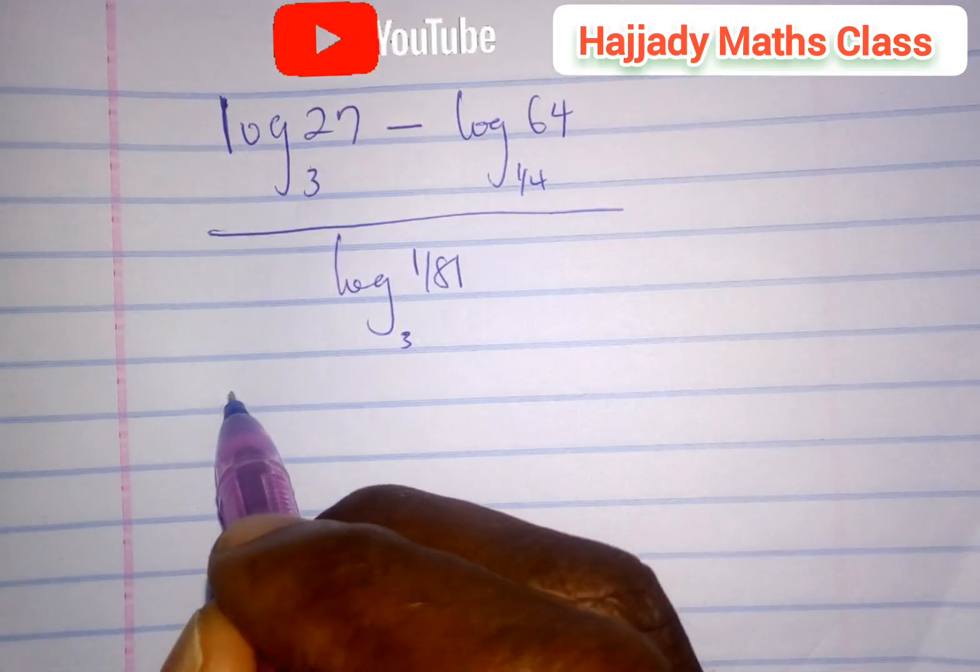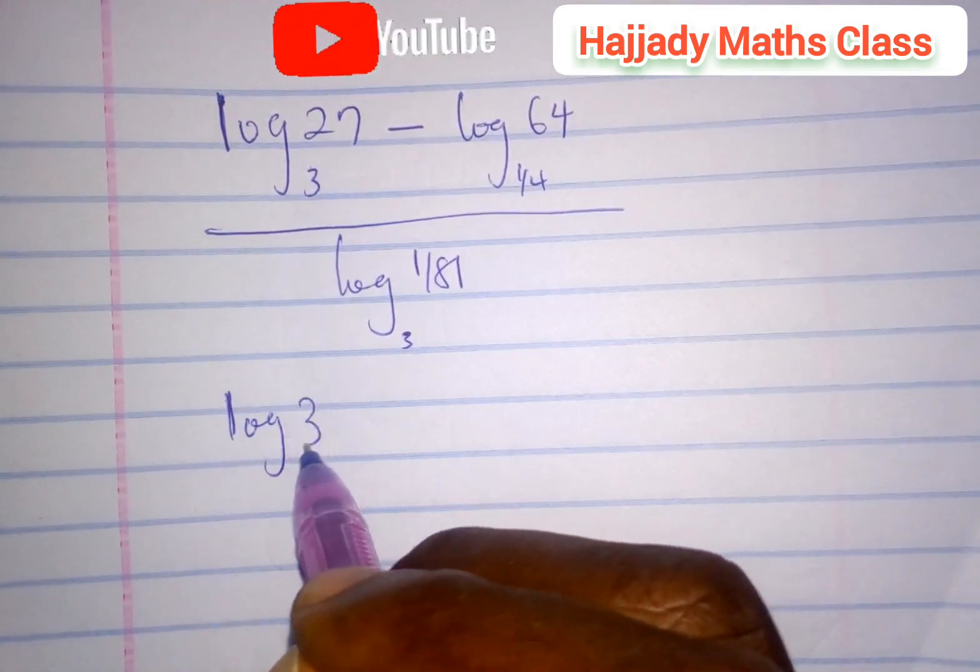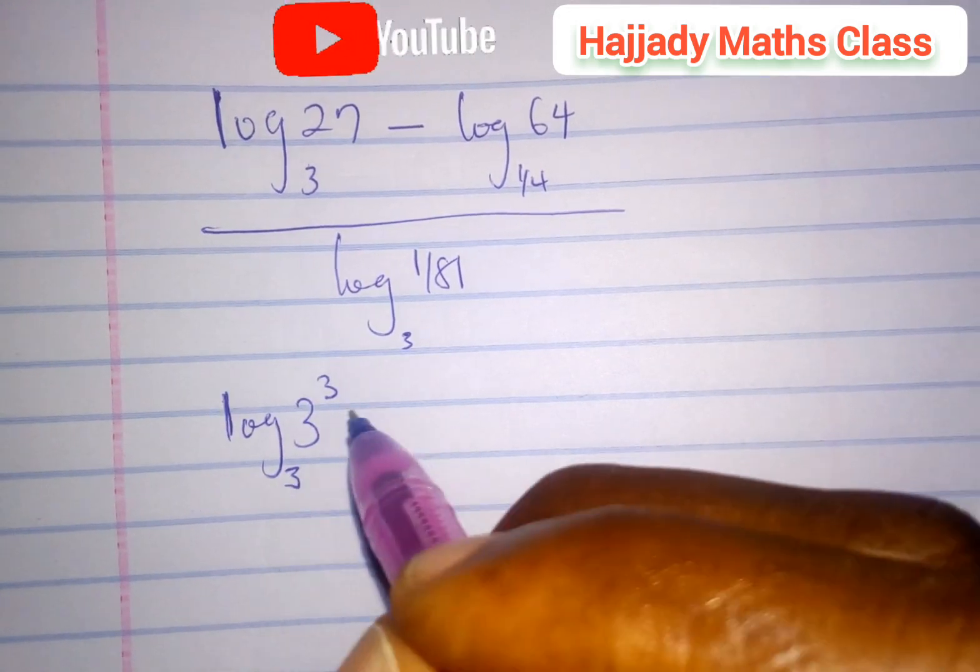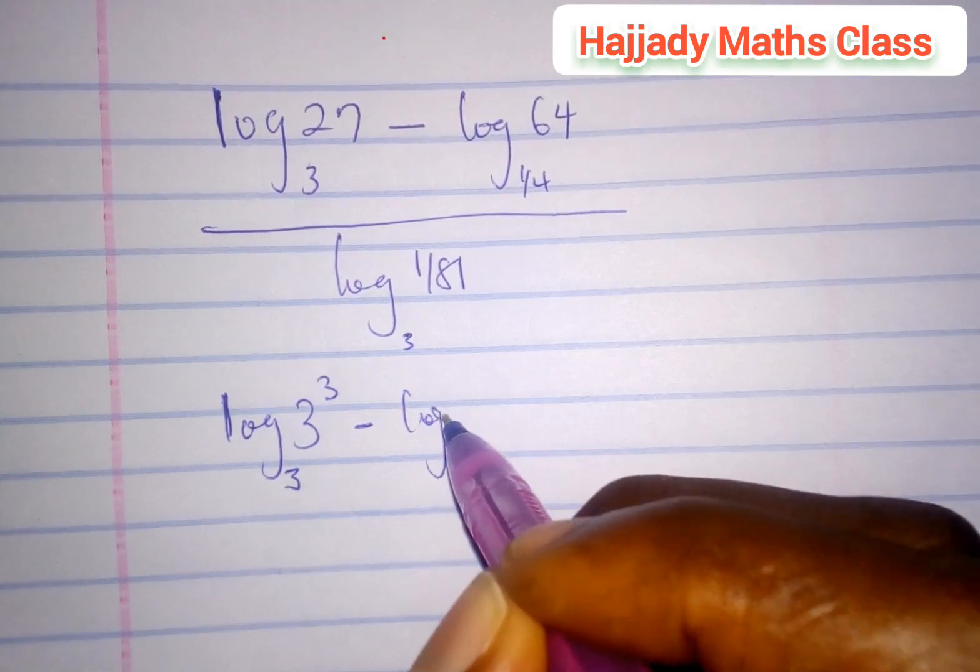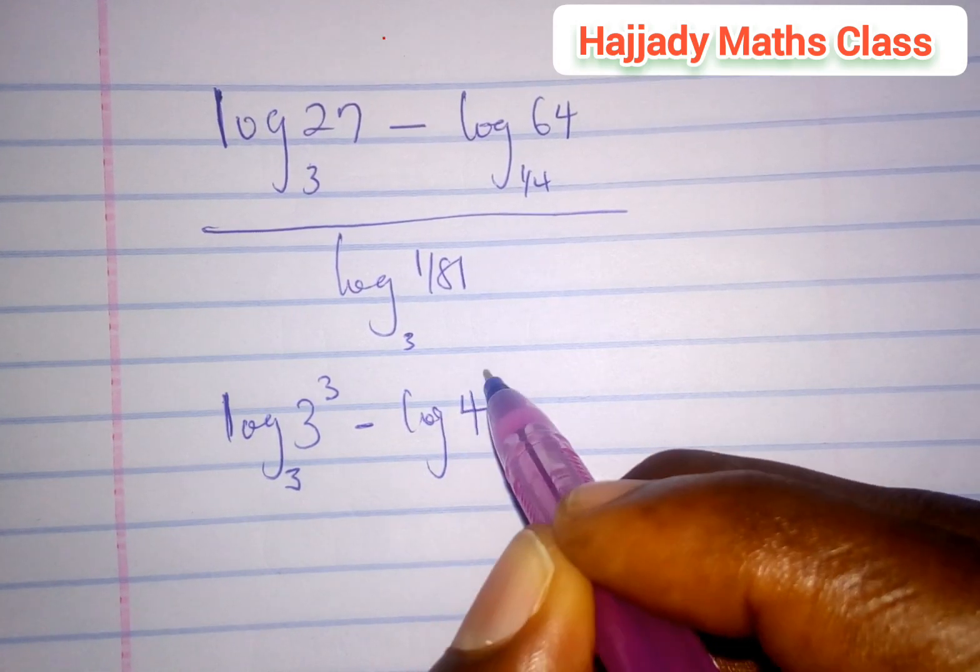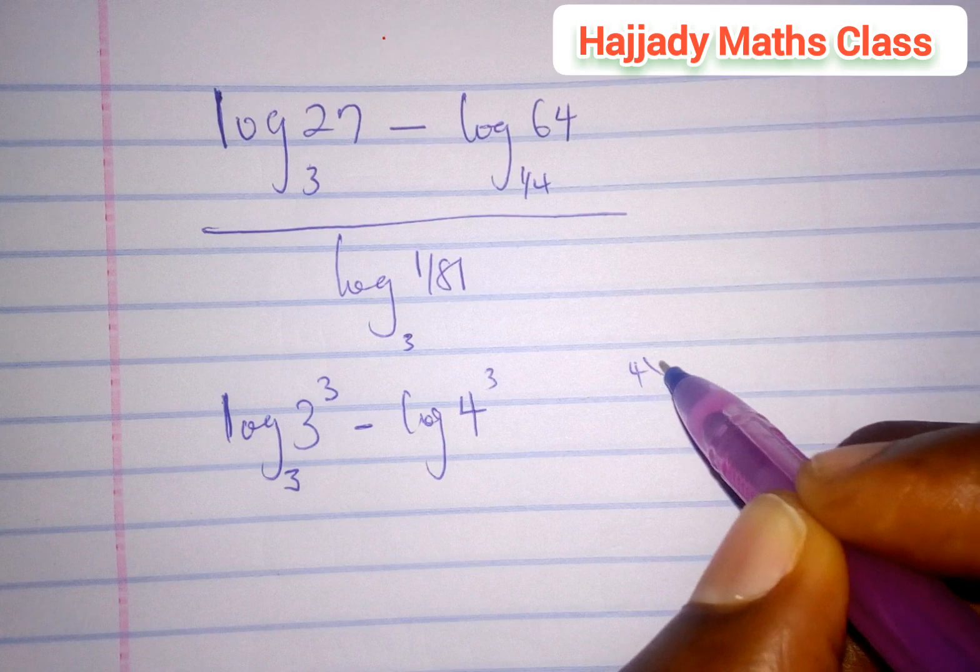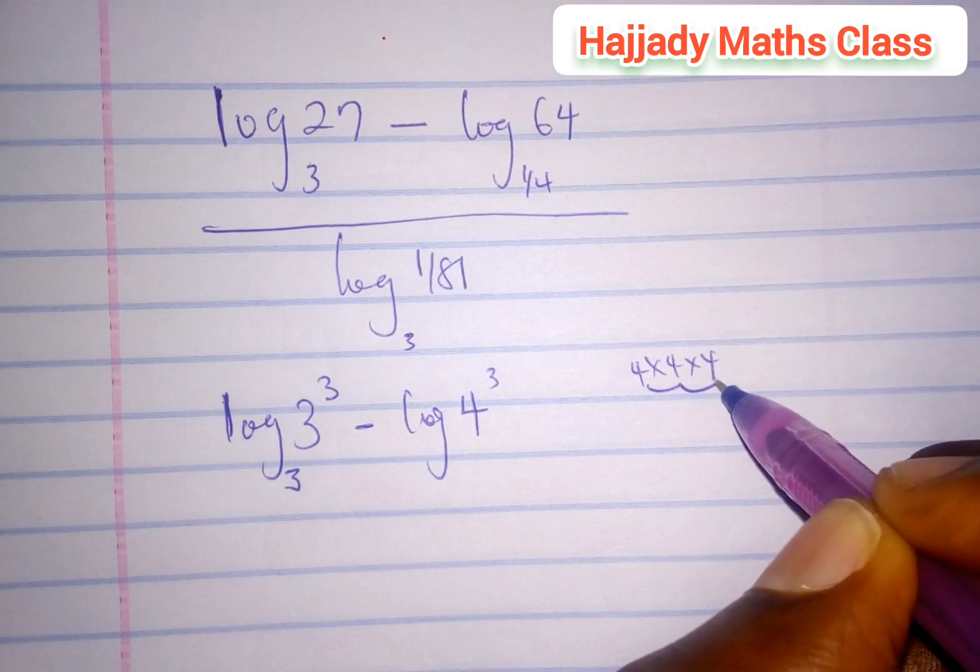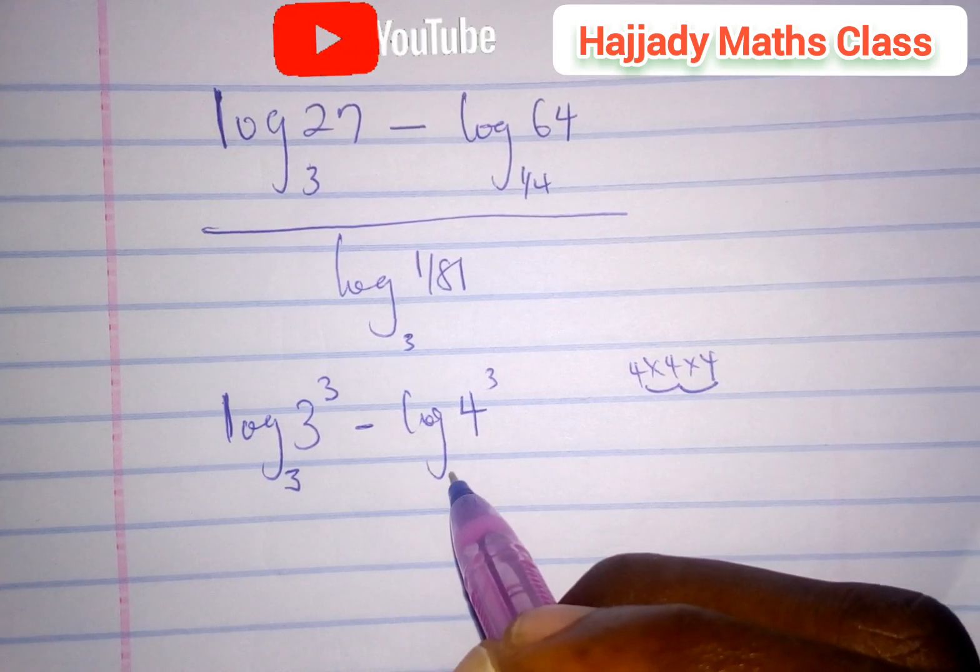For us to do this, we can write this as log 3 raised to power 3, which is equivalent to 27, base 3, minus log 64, which can be expressed as 4 raised to power 3. That means 4 times 4 times 4 equals 64, into base one over four, which can be written as 4 raised to power minus 1.